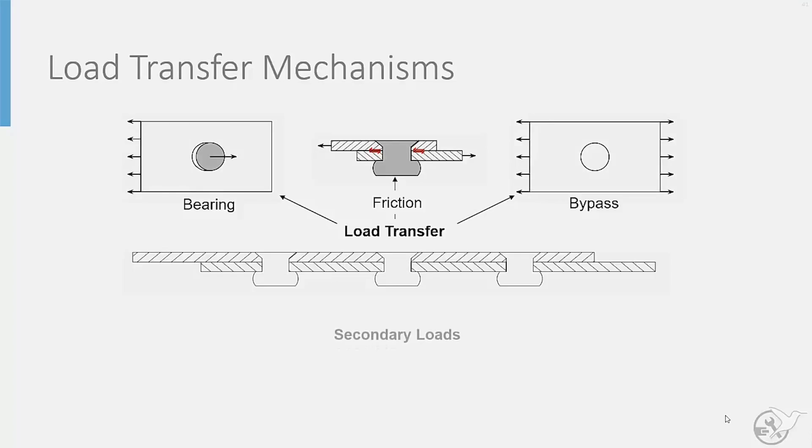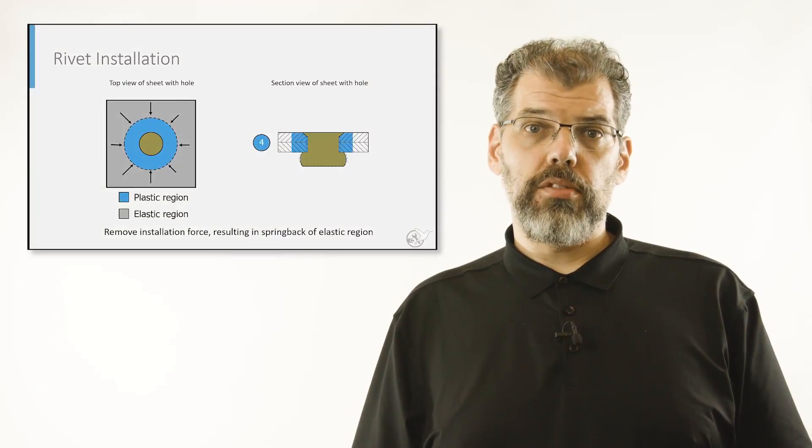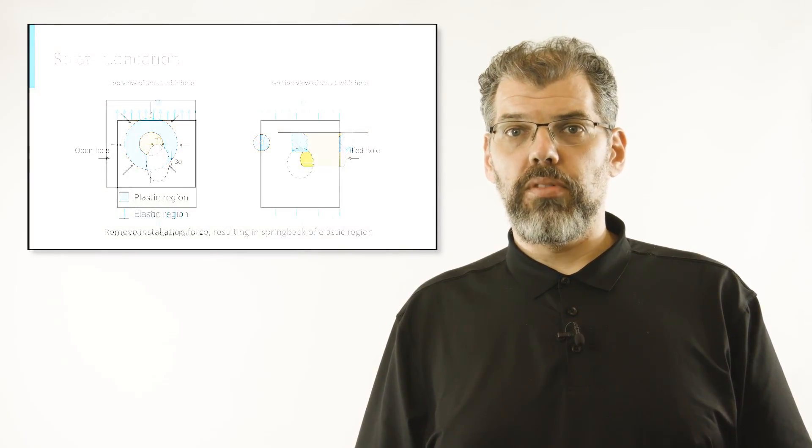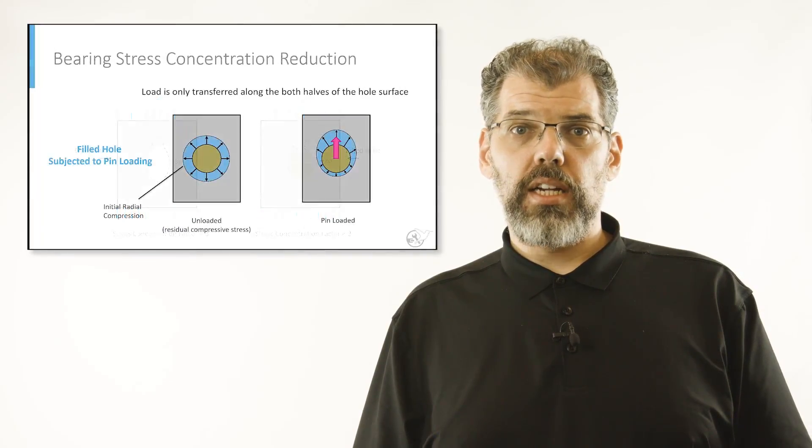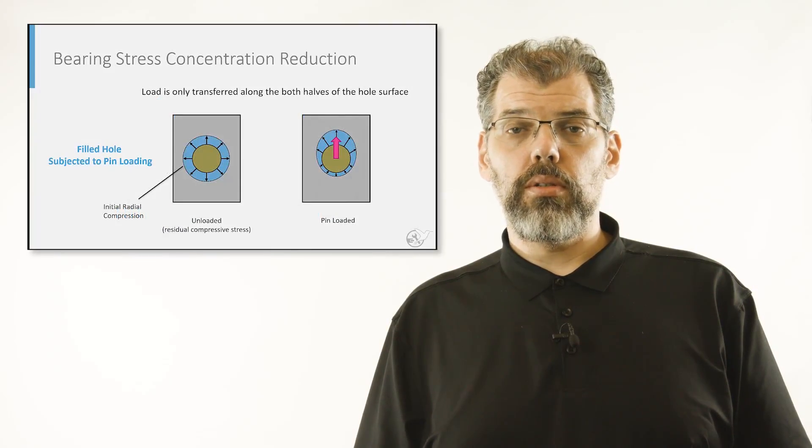In addition to load transfer, secondary loads exist within a structure known as interference and secondary bending. The role of hole filling, also known as interference, was discussed in detail in a previous video. This can produce favorable residual stresses and influence the stress concentration due to load transfer.